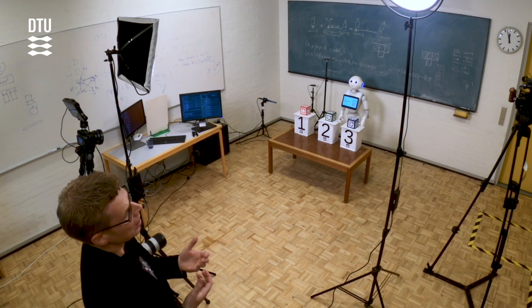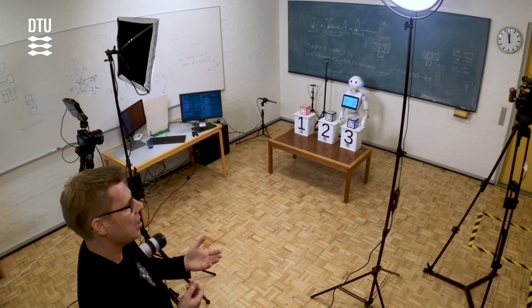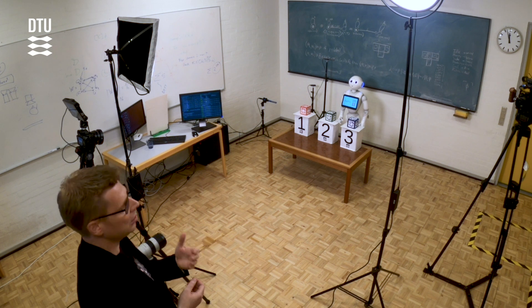What we're going to show is a robot passing a so-called Sally-Anne test. This is a test that was originally developed to test the social intelligence of humans and the ability of humans to take the perspective of others. So let's go and have a look at the robotic setup.